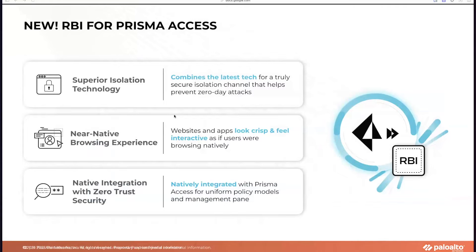What we have introduced with Prisma Access is our own inbuilt isolation technology, which provides a zero-trust isolation layer of security. We have combined multiple different technologies available for RBI to provide secure isolation, a near-native experience for the users, and at the same time, zero-trust security.